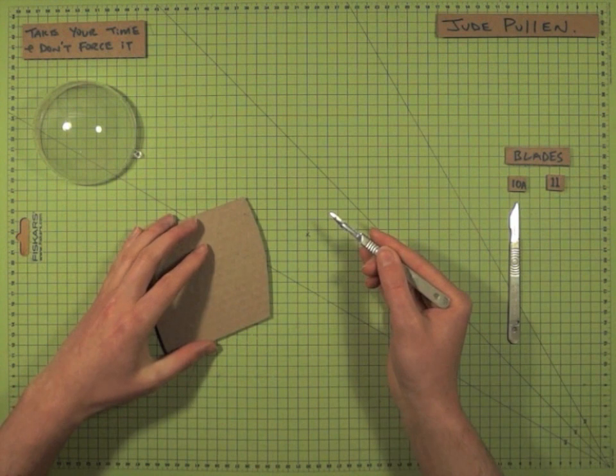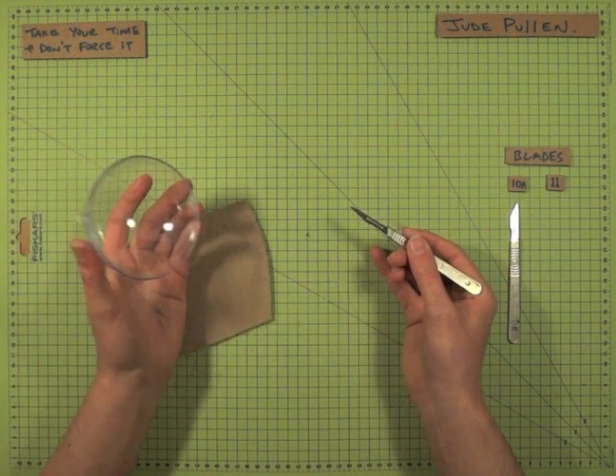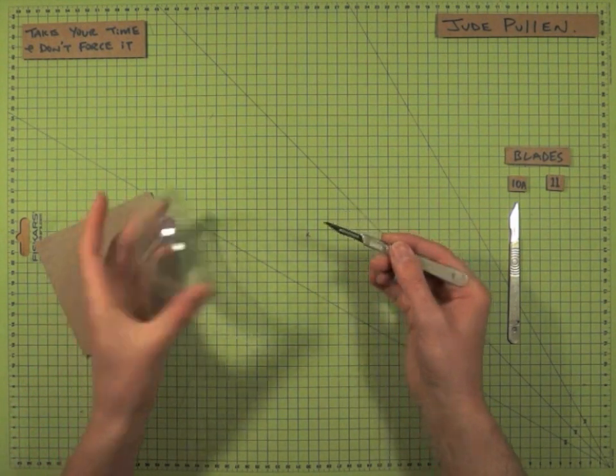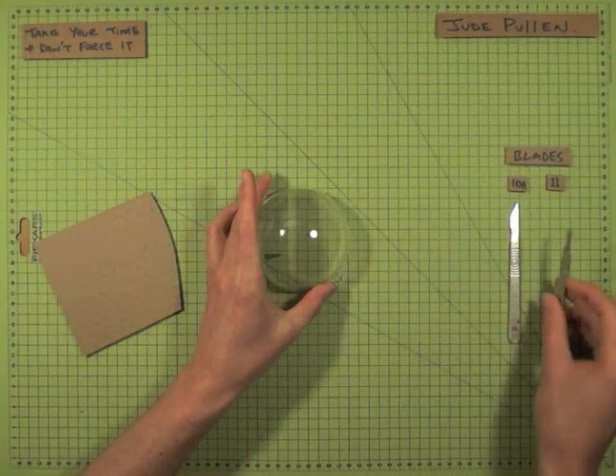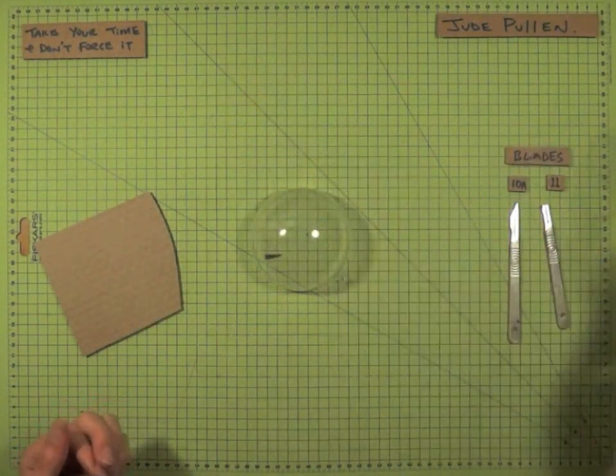However, one of the other hidden dangers you get when cutting at unusual angles is that the blade can actually snap. I've had one of these blades lodge itself in my forehead through pressing too hard. So always a word of caution: wear goggles if you can.